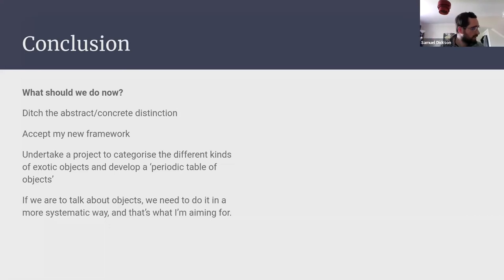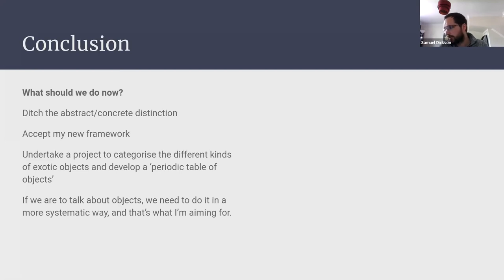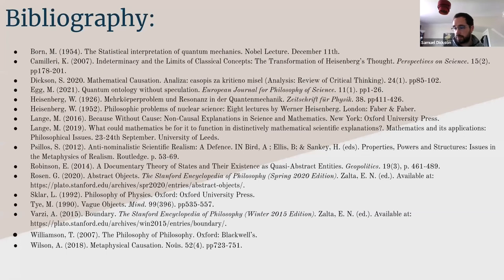We should ditch the idea of the abstract/concrete distinction being exhaustive and instead adopt this framework of exotic objects — these in-between objects — and undertake the project of categorizing the different kinds of exotic objects, developing a 'periodic table of objects.' We need to talk about objects in a more systematic way. There's something unsatisfying when people beat around the bush and don't say exactly what type of object they're talking about. This framework aims to be explicit and systematic about in-between objects. Thank you.